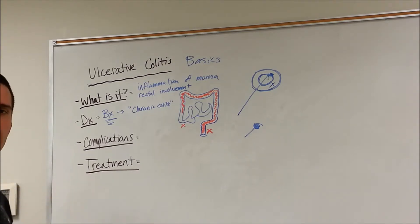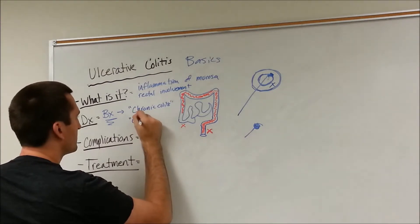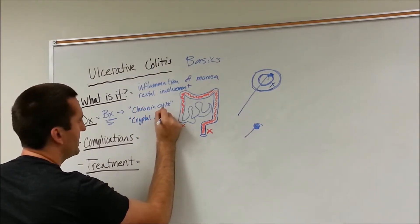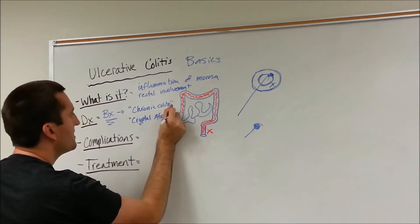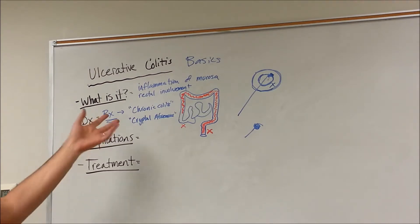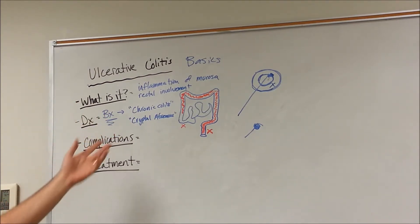This inflammation change has been going on for a long time. You may also see cryptal abscesses. My spelling's not my strong point. Cryptal abscesses, meaning that's going to be a kind of change that happens in your colon, typically when you have ulcerative colitis. And you may also see some cryptal atrophy as well.